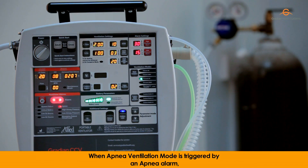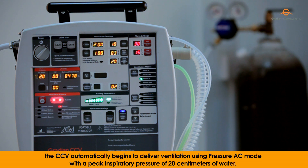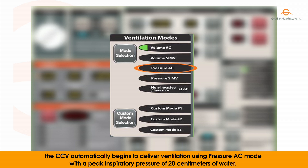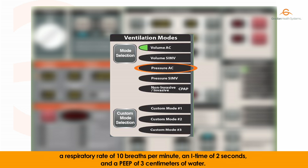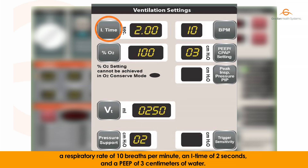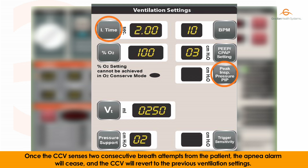When apnea ventilation mode is triggered by the apnea alarm, the CCV automatically begins to deliver ventilation using pressure AC mode with a peak inspiratory pressure of 20 cm of water, a respiratory rate of 10 breaths per minute, an I-time of 2 seconds, and a PEEP of 3 cm of water.